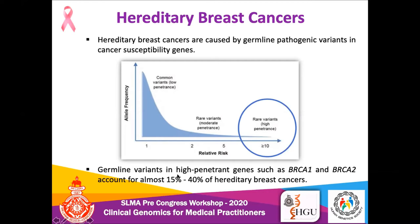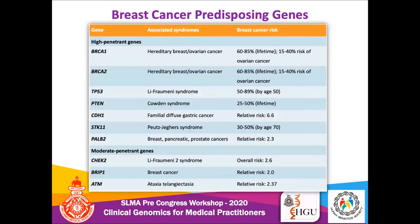For hereditary breast cancer, germline variants in high-penetrant genes like BRCA1 and BRCA2 account for the majority — almost 15 to 40 percent of hereditary breast cancers. BRCA1 and 2 are tumor suppressor genes; when mutated, they fail to suppress the cell cycle, causing loss of apoptosis and uncontrolled cell proliferation. The typical features include breast and ovarian cancer, though other tumor phenotypes can also occur in these individuals.